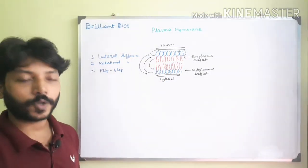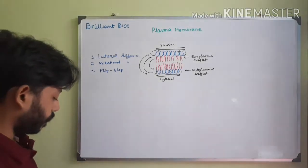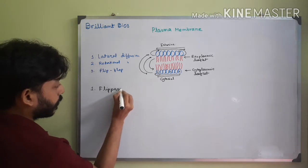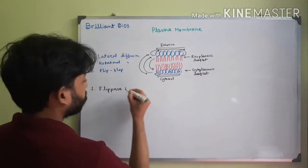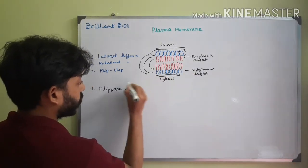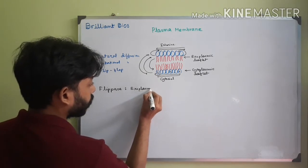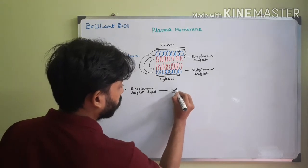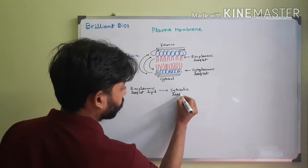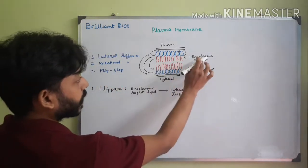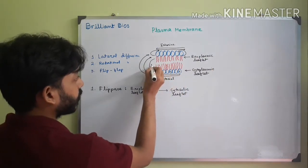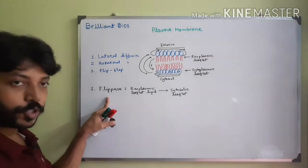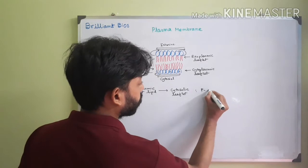There are three proteins responsible for this flip-flop movement. The first is performed by flippase — an enzyme that helps in the movement of lipid from the exoplasmic leaflet to the cytosolic leaflet. So flippase transfers exoplasmic leaflet lipid to the cytosolic leaflet. This protein is actually a P-type ATPase.